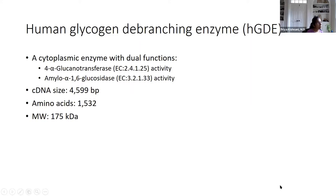Let's start with what causes GSD type 3. The enzyme that's deficient is called human glycogen debranching enzyme, or HGDE. This is a cytoplasmic enzyme — in the cell, it resides in the compartment called the cytoplasm, where all the other glycogen enzymes are, other than the enzyme for Pompe disease, which sits in a lysosome.